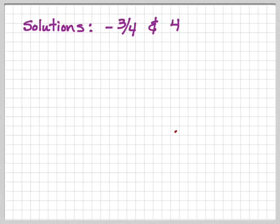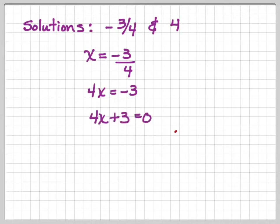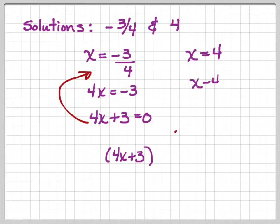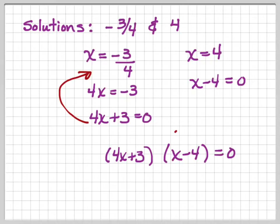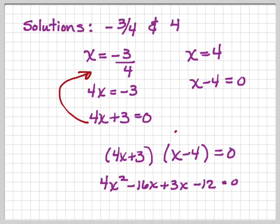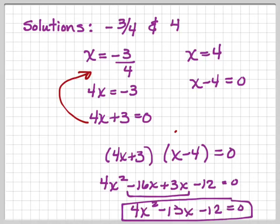Let's do another one: the solutions are negative 3 over 4 and 4. For x equals negative 3 over 4, multiply both sides by 4 and add 3, giving 4x plus 3 equals 0. For x equals 4, that gives x minus 4 equals 0. So the factors are 4x plus 3 times x minus 4 equals 0. Using FOIL: 4x squared, outside minus 16x, inside 3x, last minus 12. Combining middle terms: 4x squared minus 13x minus 12 equals 0.